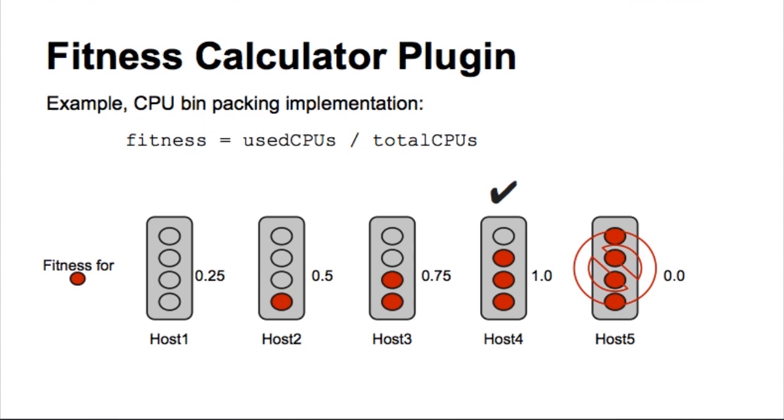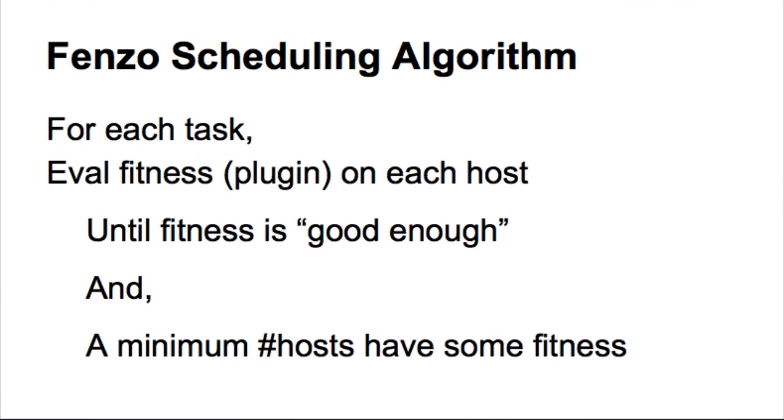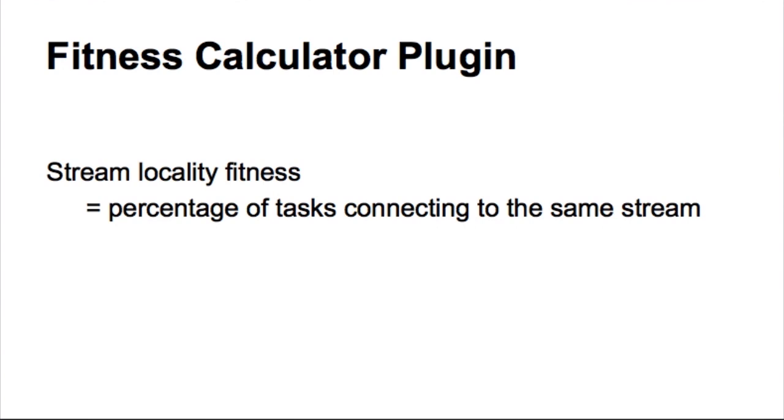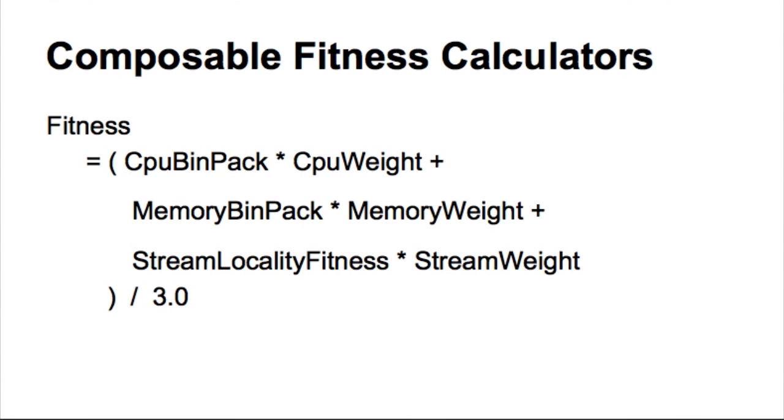Going back to the algorithm, the good thing is I don't need to do this on every machine. I just need to do it until the fitness is good enough. And similarly, I can do stream locality by defining a plugin for fitness, saying fitness is defined as the ratio of the tasks that are connecting to the same stream as the one that I'm trying to launch right now. And that automatically gives me stream locality. But sometimes we want to do more than just one calculation. So I can have multiple fitness calculators and compose them together. So I wanted to achieve CPU bin packing, memory bin packing, and stream locality. And I can assign them weights to say, stream locality is more important than CPU bin packing or the other way. And similarly, you can have any number of fitness calculators and do this.